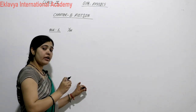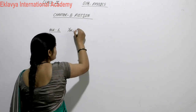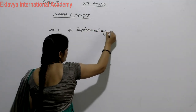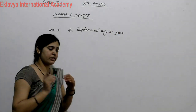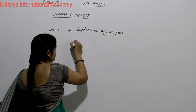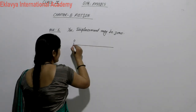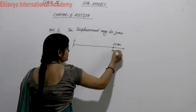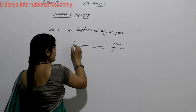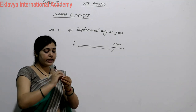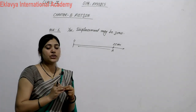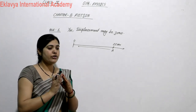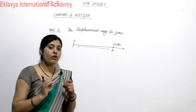Displacement can be zero. For example, consider 25 kilometers. If an object returns to its initial position, then during that condition, what are the initial and final positions? They are the same. Therefore, there is no shortest distance between the initial and final position.